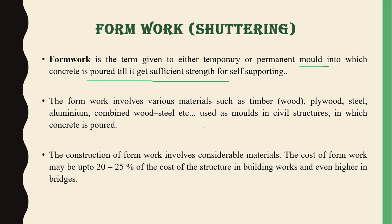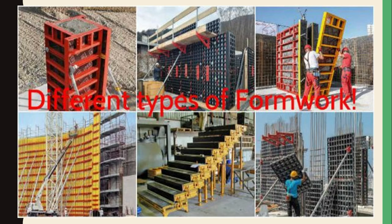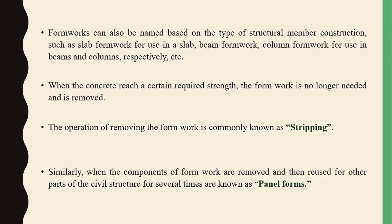Formwork can be made up of various materials like timber, plywood, steel, etc., on which the classification is based. You can see formwork used for beams, columns, slabs, and everywhere. Always remember, the cost of formwork for construction is around 20 to 25 percent of the total cost of the structure, and for bridges it may be more. Based on the purpose — slab, beam, column — you give the corresponding name to the formwork.